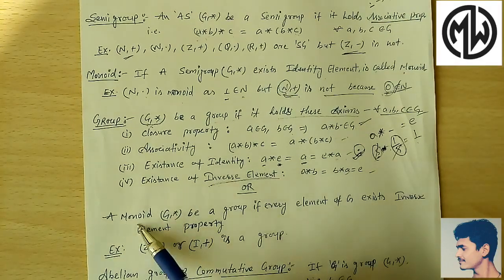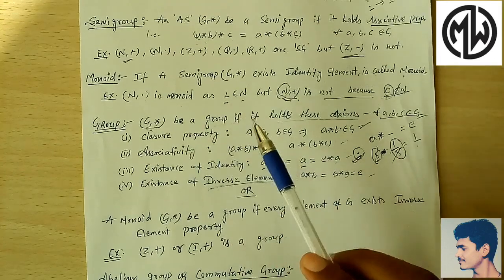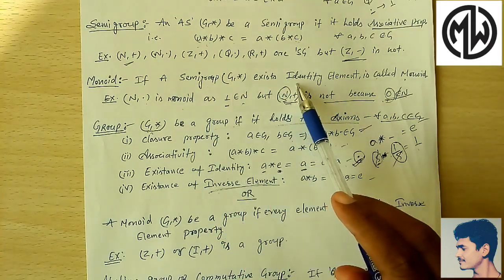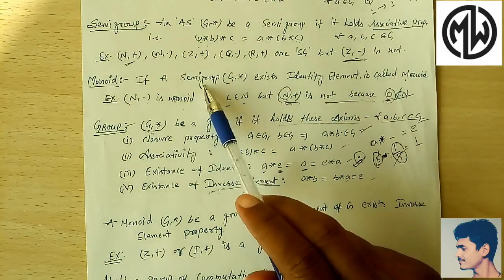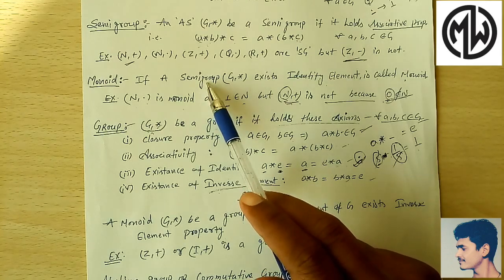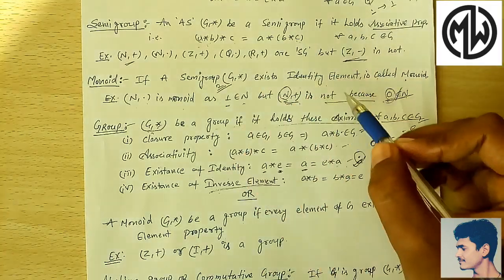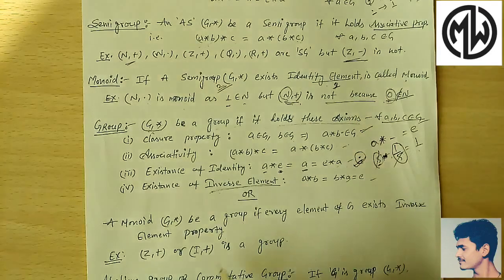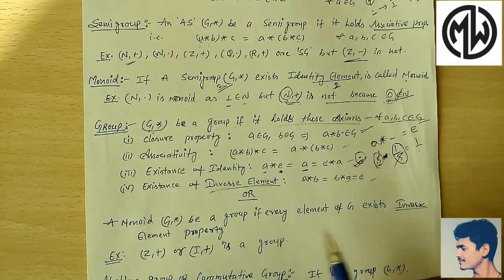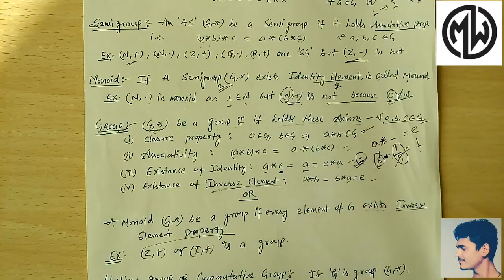We can also say: a monoid (G, star) is a group if every element of G has an inverse element. Recap: a semi-group means binary operation with closure property and associative property — that is two properties. A monoid adds the identity element property — three properties. The fourth property is that every element exists an inverse. So basically, the same definition: if all four properties hold for a set with binary operation, it is a group.